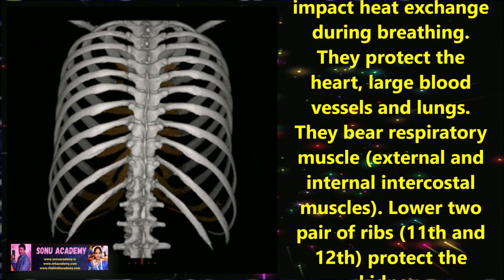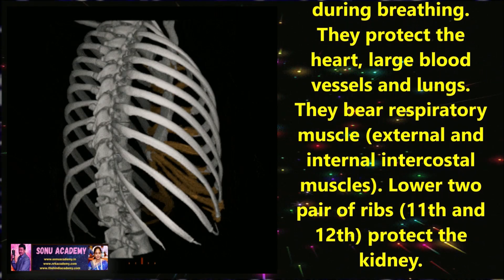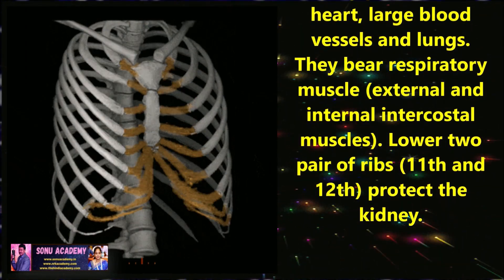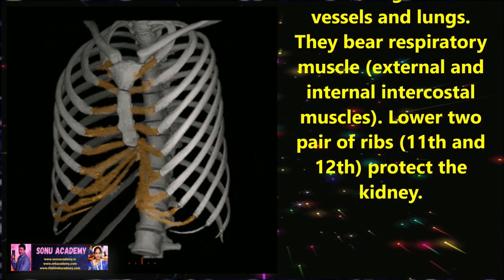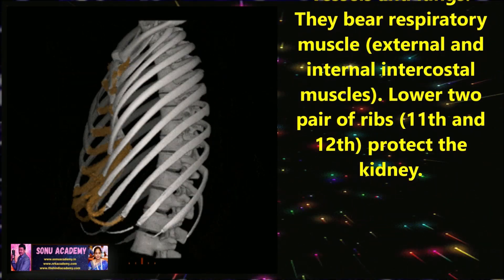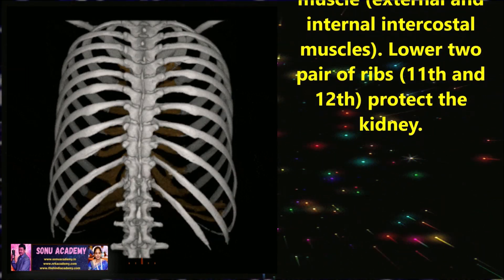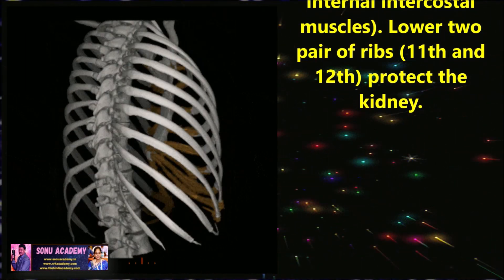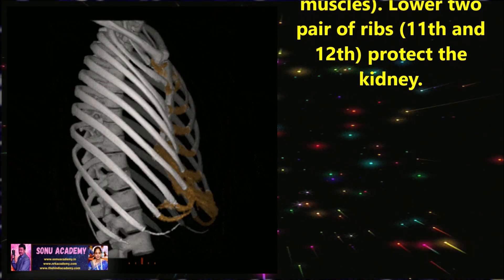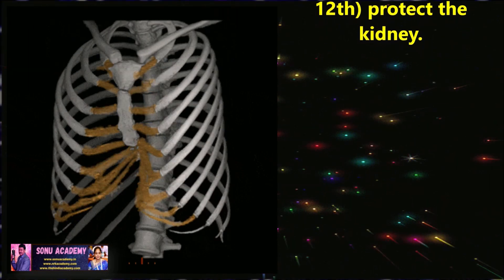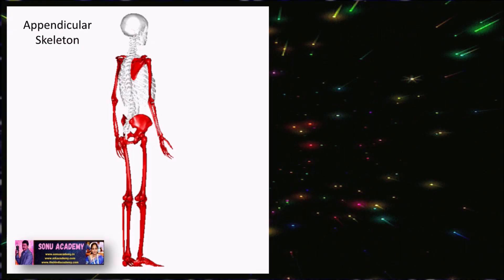The ribs protect the heart, large blood vessels, and lungs. They bear respiratory muscles — external and internal intercostal muscles. The last two pairs of ribs, the 11th and 12th, also protect the kidneys.